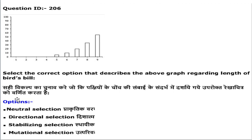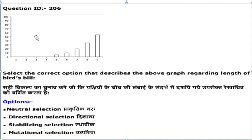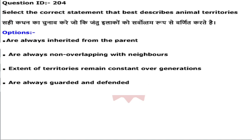Next question: select the correct option describing a given graph about bird bill (beak). The options are neutral selection, directional selection, stabilizing selection, or mutational selection. Options A and D can be omitted. By looking at the graph, it is following directional selection — a type of natural selection where selective pressures favor only one extreme of a trait. Here the distribution of bird bill size moves in one direction. Directional selection is the correct option.